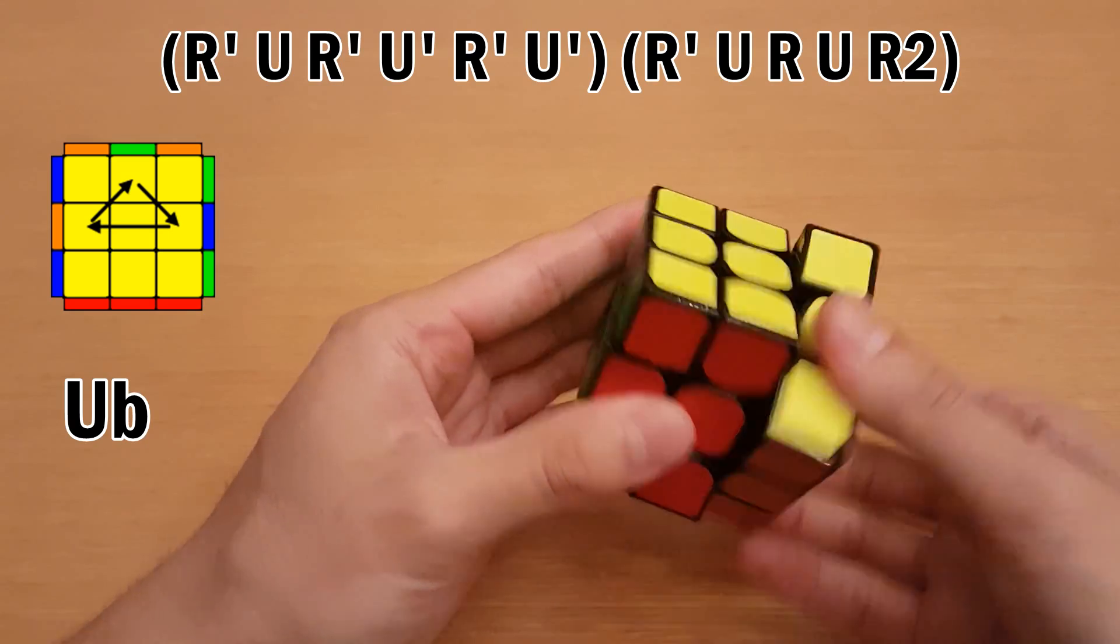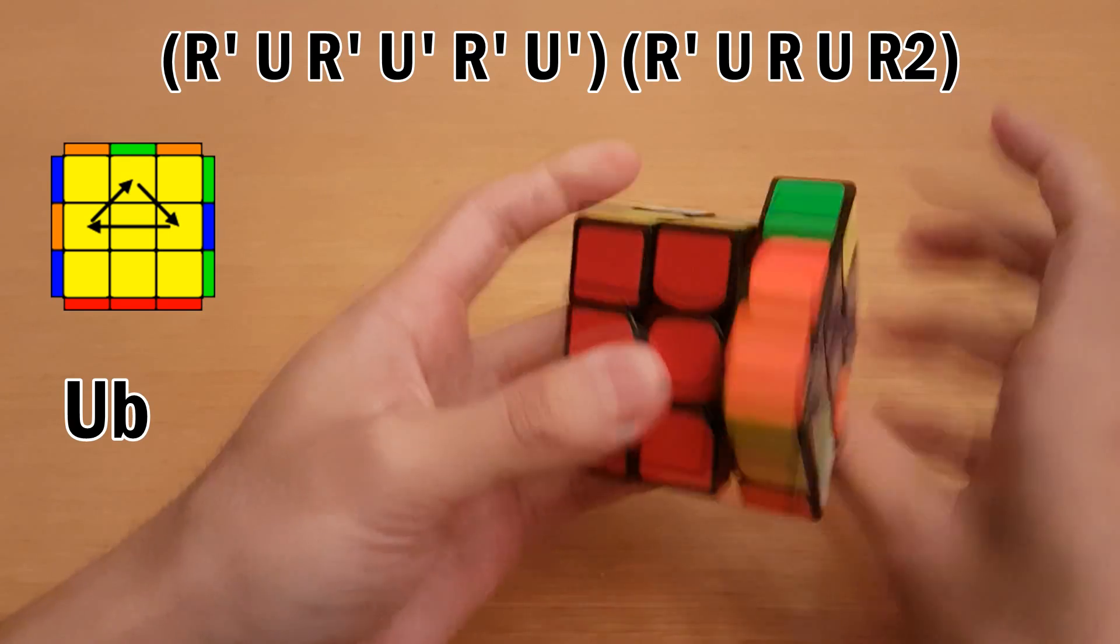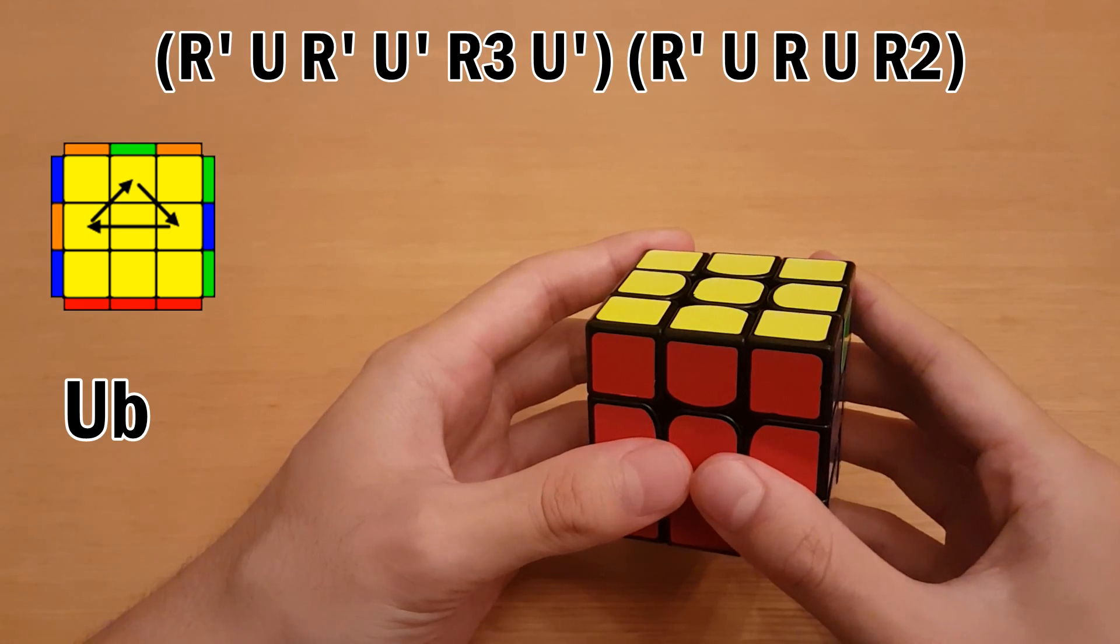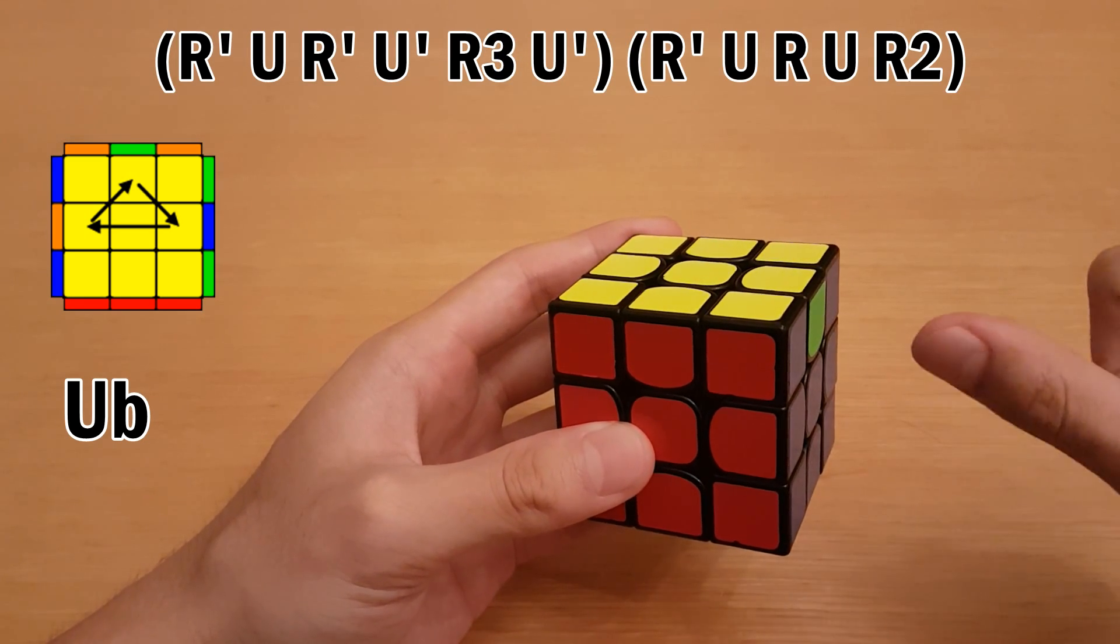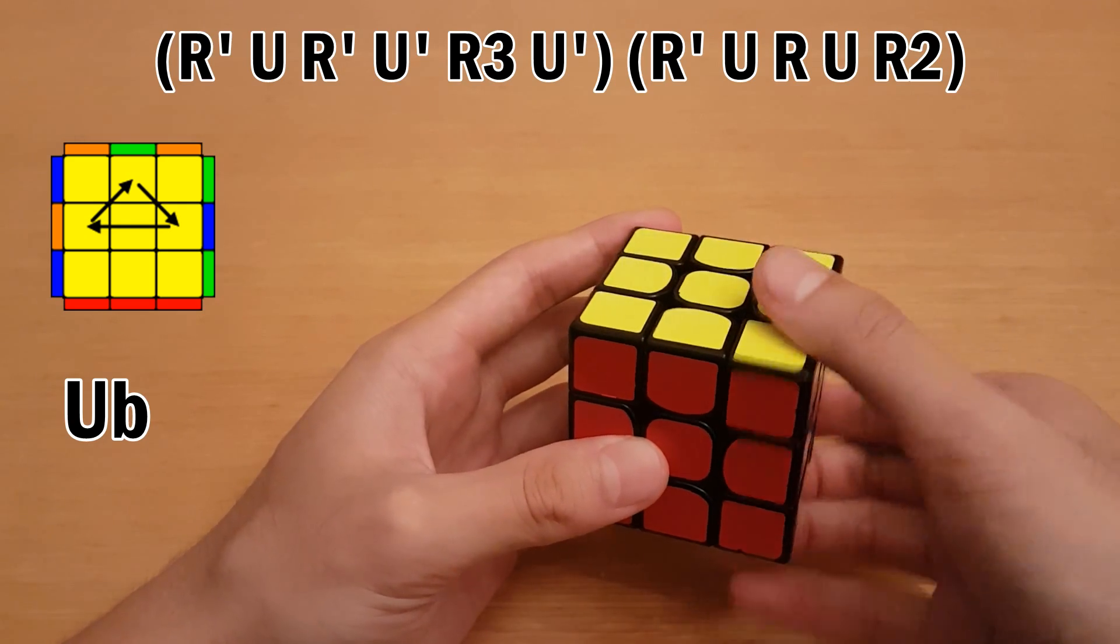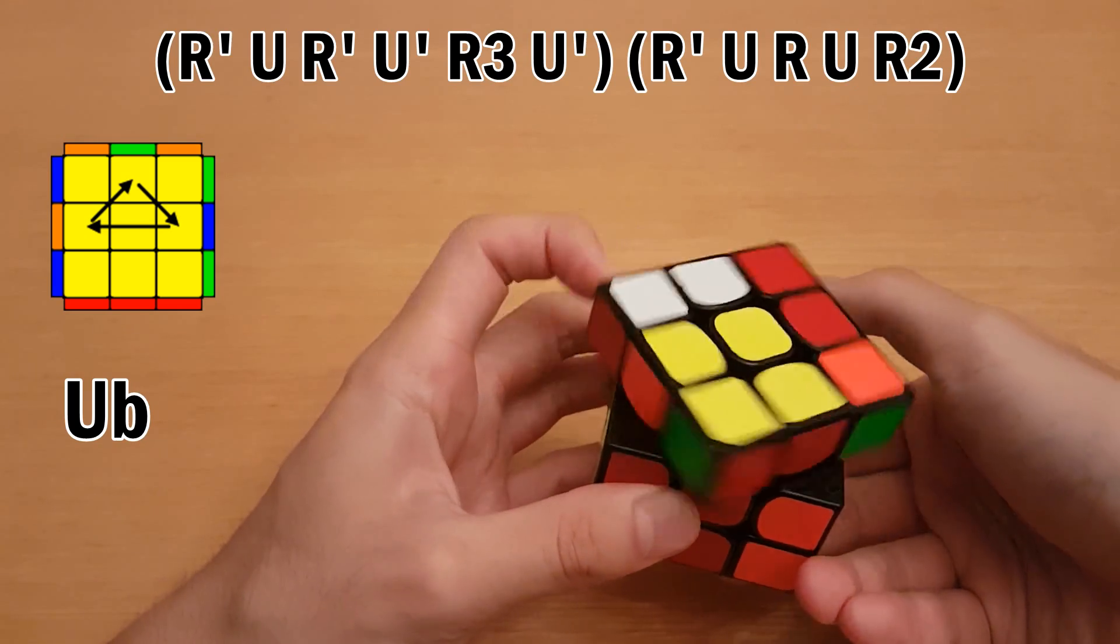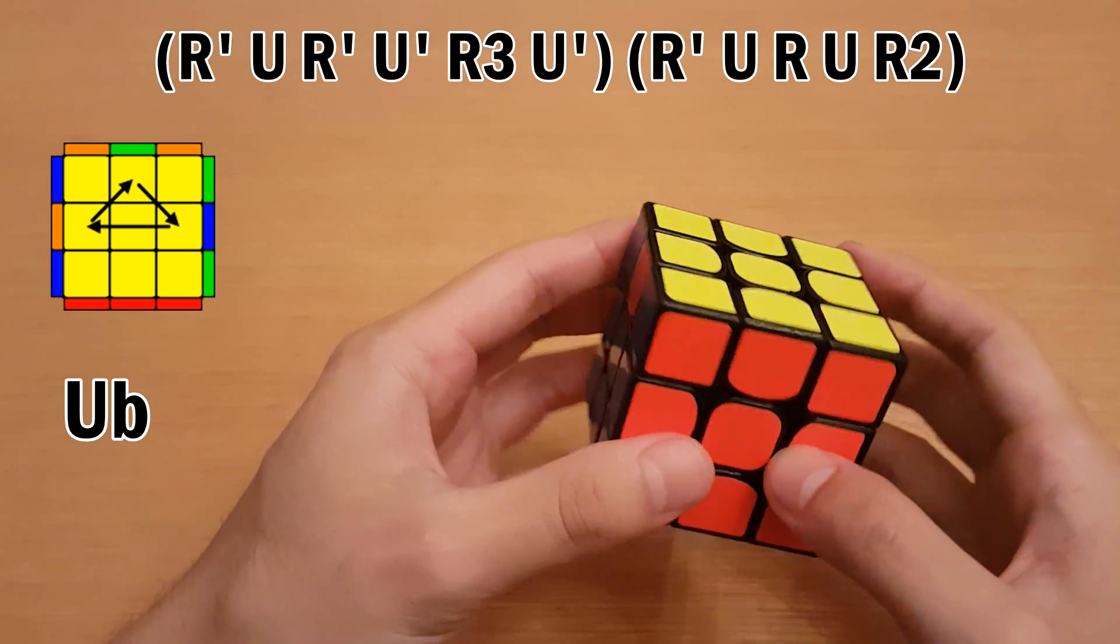Now faster. Another thing people like to do is instead of dragging their thumb to do R-prime, you can avoid a re-grip there by doing R3 instead. So it goes like this. So R3 here. And then you can avoid re-grips completely. Now faster.